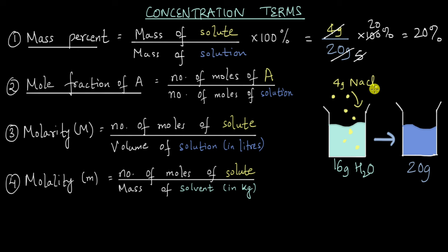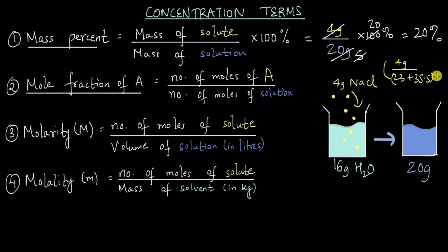We'll calculate the mole fraction of the solute NaCl. The number of moles equals given mass divided by molar mass. The given mass is 4 grams, and the molar mass of sodium chloride is 23 for sodium plus 35.5 for chlorine — we call this Na. For the solution's total moles, we need to add the moles of the solute and the moles of the solvent.